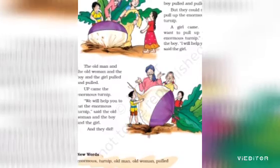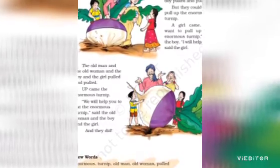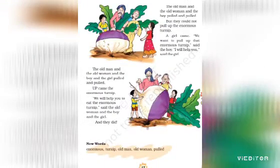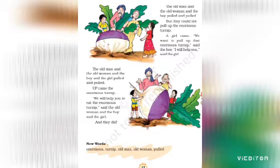A girl came. 'We want to pull up that enormous turnip,' said the boy. 'I will help you,' said the girl. The old man and the old woman and the boy and the girl pulled and pulled. Up came the enormous turnip. 'We will help you to eat the enormous turnip,' said the old woman and the boy and the girl. And they did.